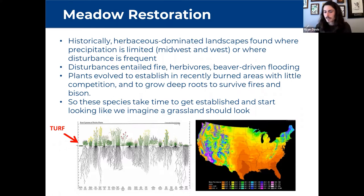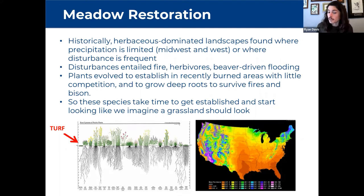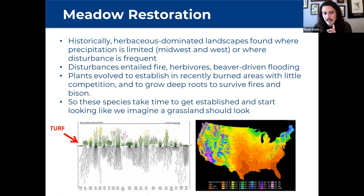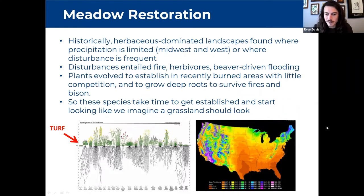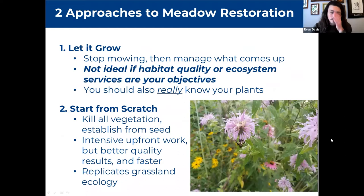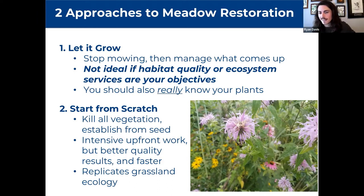There are two approaches to restoring meadow habitat. The first — stopping mowing and managing what comes up — is not recommended. Simply stopping mowing turns fescue into overgrown fescue, not a meadow or grassland. Once you let it grow, invasive species that were suppressed by mowing start to emerge, creating more complex problems. Also, if a landowner stops mowing before the herbicide application scheduled months away, invasive species develop over the summer making site prep much harder. Ryan cautions: keep the area mowed right up until you're ready to start from scratch.